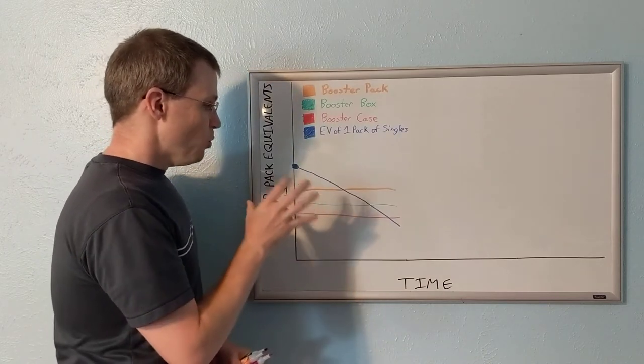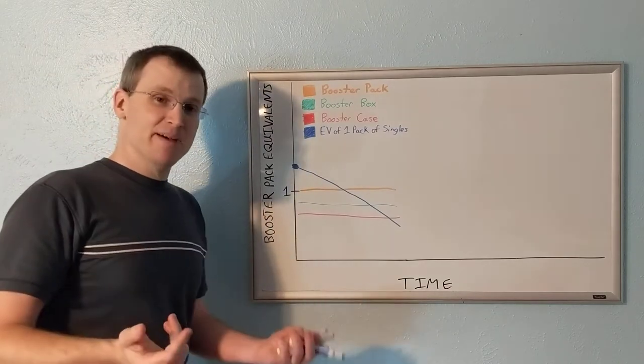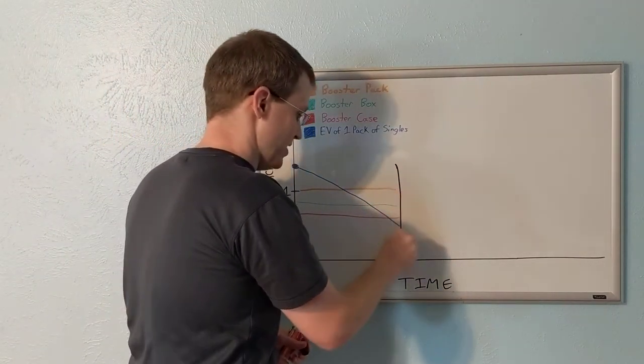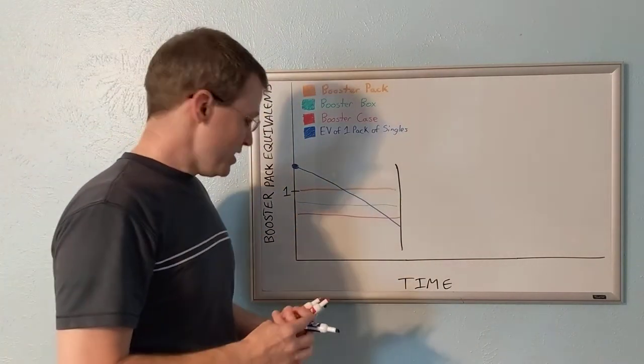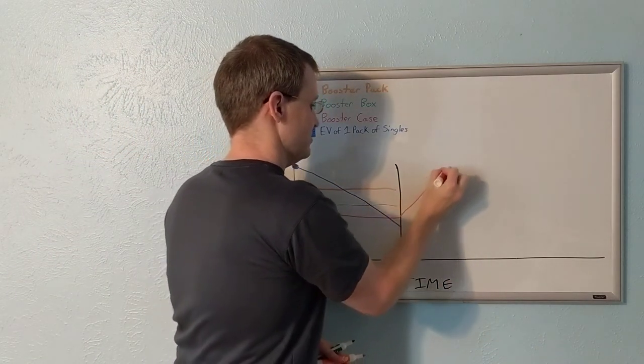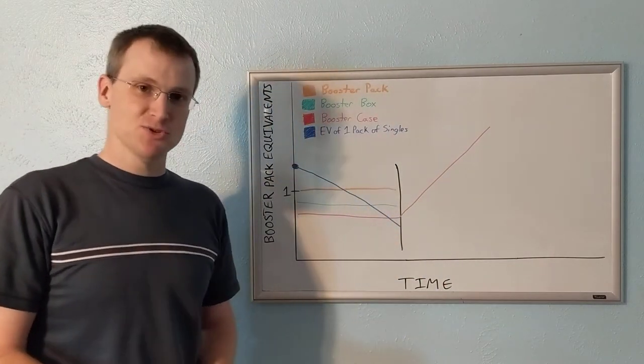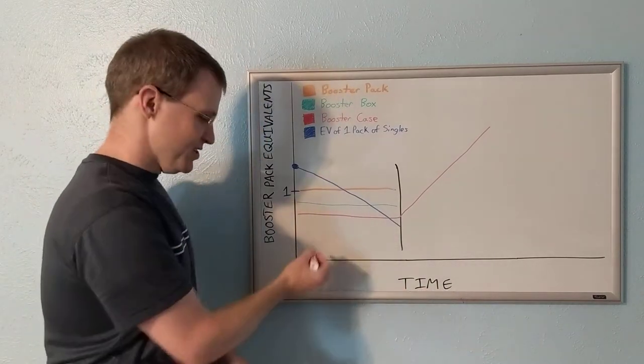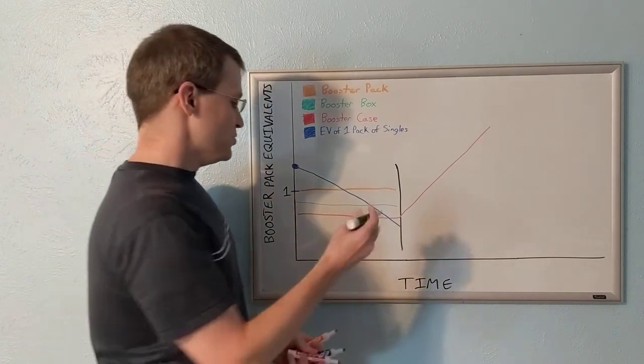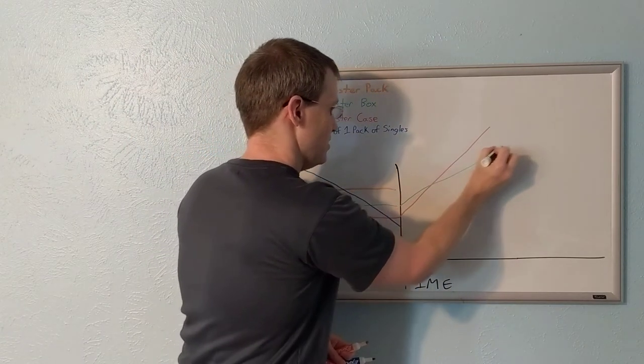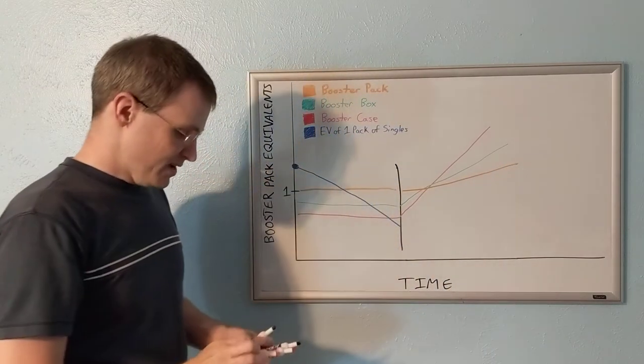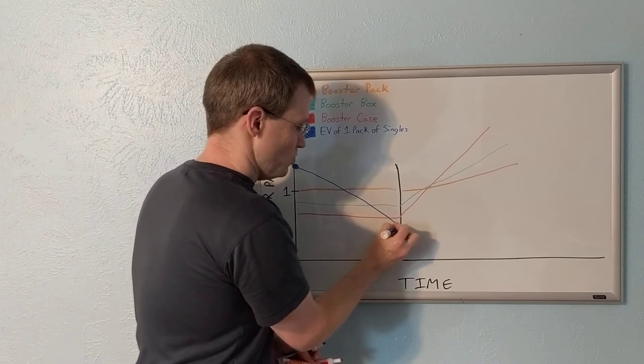All of this holds true while a set is in print. The interesting thing happens when a set goes out of print. Let's just mark the set going out of print right there. What happens to the value of a sealed case? Booster packs, it takes off and it takes off like this. Now, don't pay too much literal attention to the exact slope of the line. And again, this time scale, it's not like one inches a week or one inches a year or anything. It's a generalized scale. Booster boxes will take off at a less steep trajectory. Booster packs, they'll be even less steep than that. And singles will be the least steep.